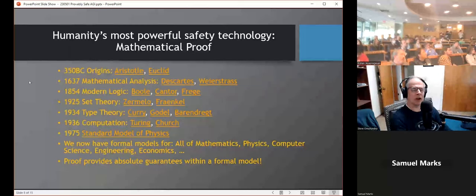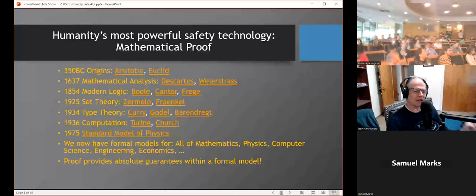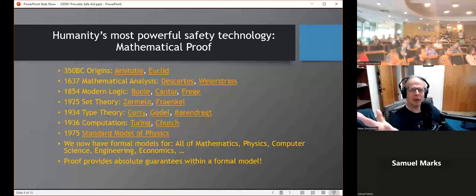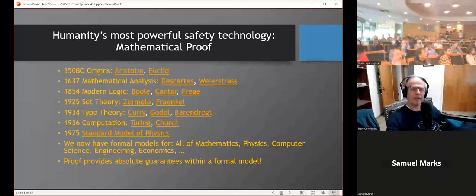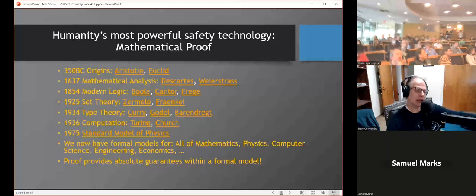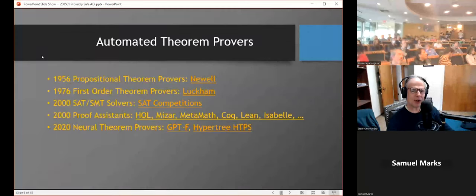Well, I think humanity's most powerful safety technology is mathematical proof. Mathematical proof has been something humanity has been working on for at least 2,000 years. Back in 350 BC, we had Aristotle and Euclid getting the first snippets of that. In the 1600s, we had mathematicians formalizing everything. In the 1800s, modern logic started emerging from people like Boole, Cantor, and Frege. In the early 20th century, we had set theory, type theory, and computation theory all coming in a big flurry. In the late 20th century, physics got a standard model believed to cover basically all phenomena on Earth. And we now have formal models for all of mathematics, physics, computer science, engineering, and economics. The power of this whole line of human thought is that mathematical proof provides absolute guarantees within a formal model.